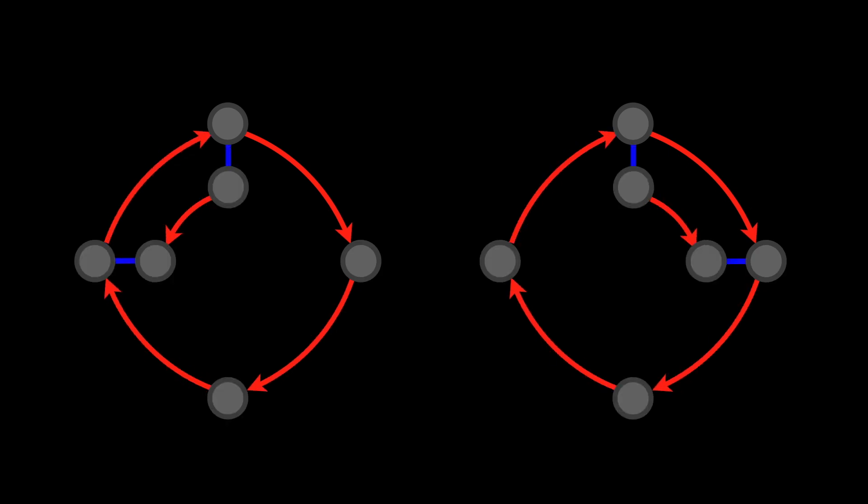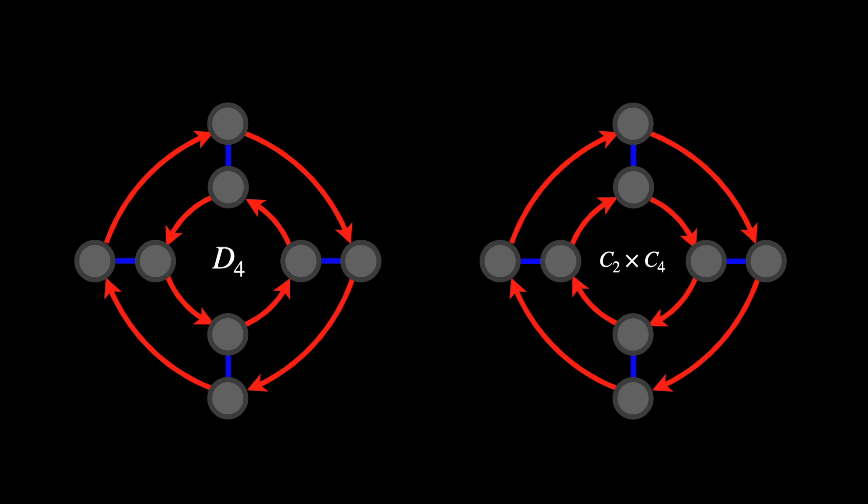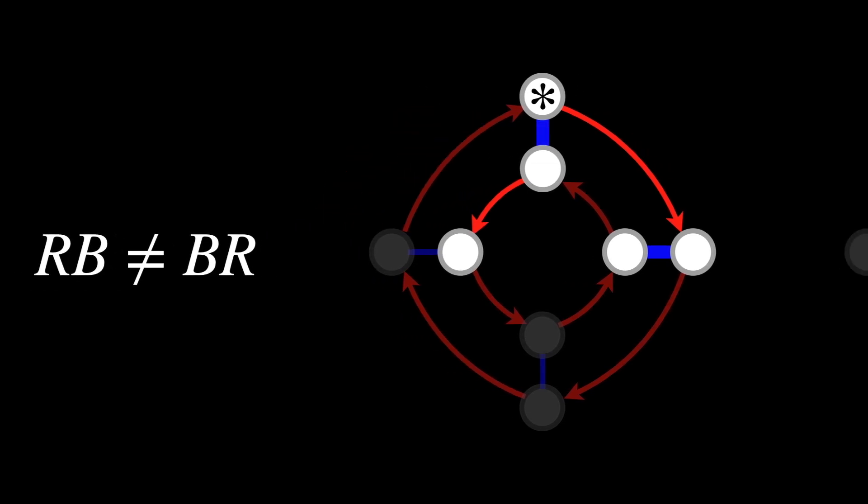This may seem obvious to identify visually, but what if we take a look at these two very similar diagrams? One is D4, the other is C2 times C4. If we take a closer look and follow the red-blue pattern, the D4 leads us to a different node than the blue-red pattern. So RB cannot equal BR, but the other group does.